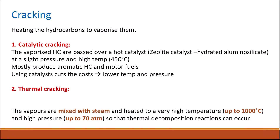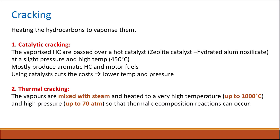For thermal cracking, the vapors of the hydrocarbons are mixed with steam and heated to very high temperatures — up to 1,000°C — and also at very high pressure, which can reach up to 70 atmospheres. Thermal decomposition then breaks down the long-chain hydrocarbons into shorter chains. This process produces lots of alkenes, which are used to make polymers.